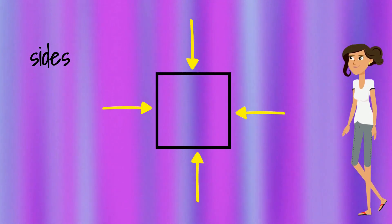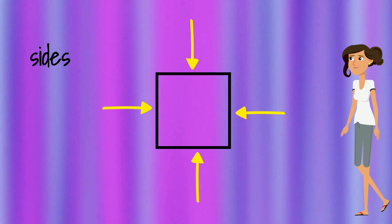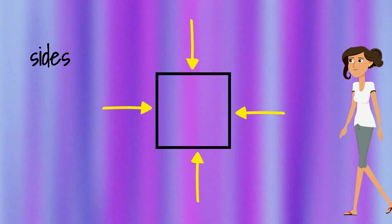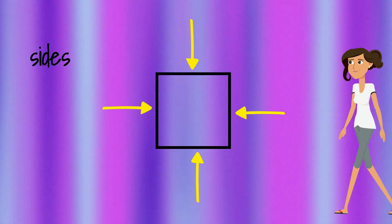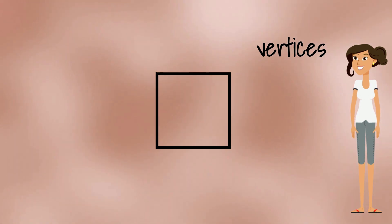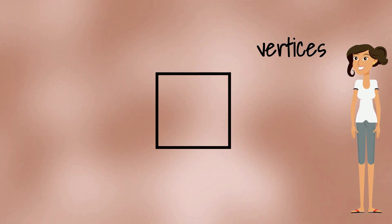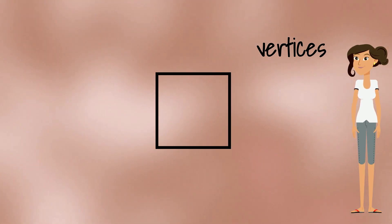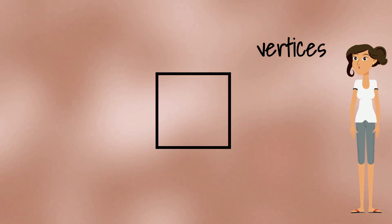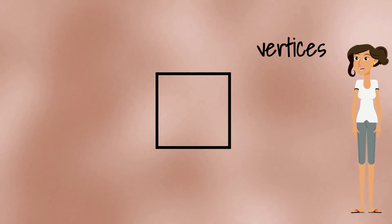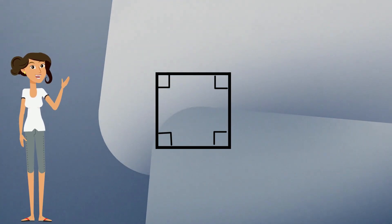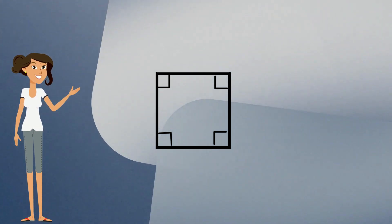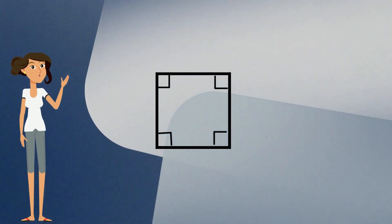A polygon needs to have three important parts. First, there are sides — straight line segments that make up the polygon. Second, vertices, which are the points where the lines intersect. And third, angles that are formed by the intersecting lines.